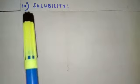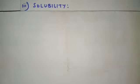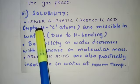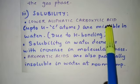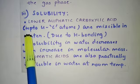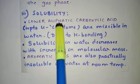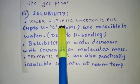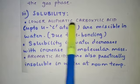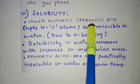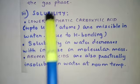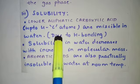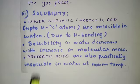Next, we will discuss the solubility of carboxylic acid. Lower aliphatic carboxylic acids — here by lower they mean up to 4 carbon atoms — are miscible in water because they form hydrogen bonds.